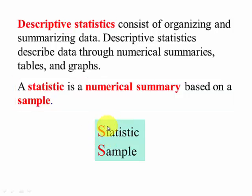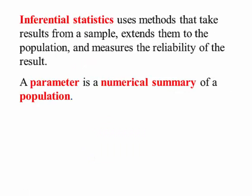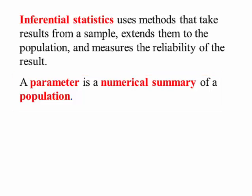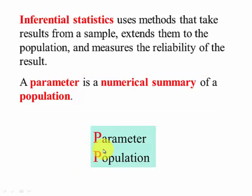To keep this straight: a statistic starts with an S, and a sample starts with an S, so anything measuring something from a sample is a statistic. Inferential statistics uses methods to take results from a sample and extend them to a population — to make inference — and it also measures the reliability of the result. A parameter is a numerical summary of a population. Population starts with a P, and parameter starts with a P, so a parameter is some kind of measurement on a population.